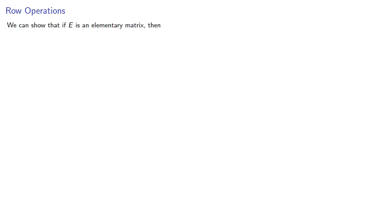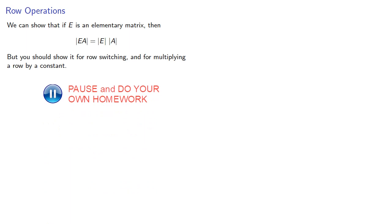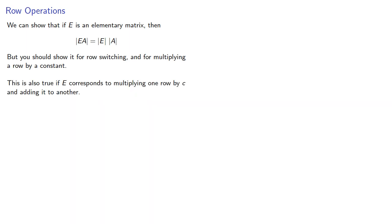We can show that if E is an elementary matrix, then the determinant of EA is the determinant of E times the determinant of A, but you should show it for row switching and for multiplying a row by a constant. Now this is also true if E corresponds to multiplying one row by C and adding it to another. This is a little harder to prove, and so we'll consider an example which we can generalize.